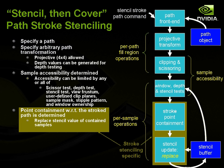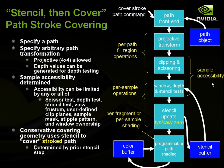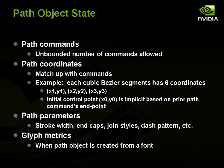Now let's talk about the kinds of state a path object can have. We've looked at some path commands — move-to, line-to, and curve-to kind of commands. There's actually an unbounded number of commands allowed in a path object. Our star had about six commands, but we could have a very complicated path with literally thousands or tens of thousands of commands, and we'd be able to render that just fine with NVPath rendering. There's no limit to the number of commands in a path.